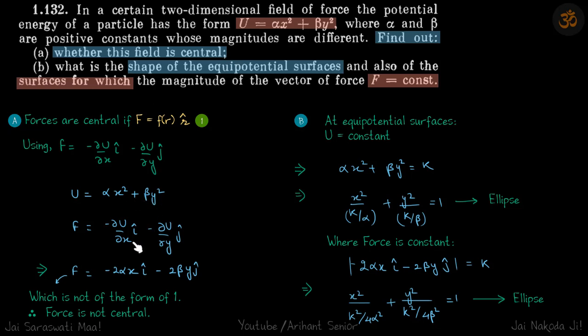We see that minus dU/dx becomes minus 2 alpha x for this term, and this term becomes zero because with respect to x this is a constant. Minus dU/dy j cap: for minus dU/dy, this term becomes zero and this term will become minus 2 beta y.